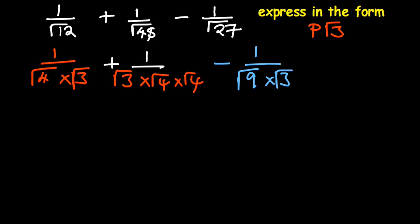Let's see what we can get on the next step. So we can determine that root of 4 is 2. So we're going to end up with 2 root of 3, plus.